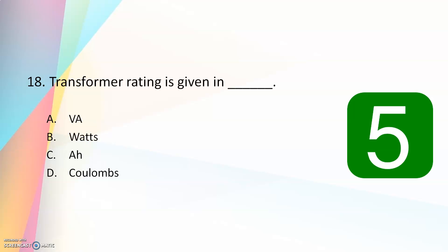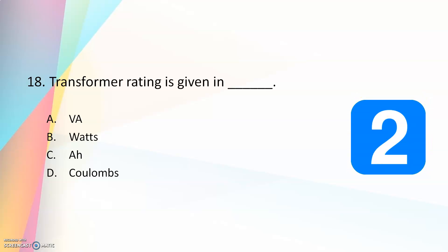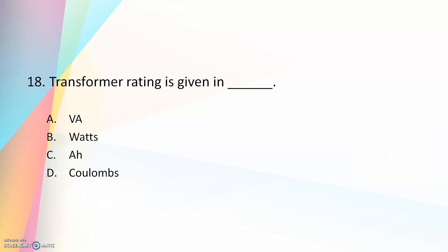Eighteenth question: a transformer rating is given in — VA, watts, Ah, or coulombs. The answer is VA (volt-amperes). A transformer is basically rated in VA, kVA, or MVA.